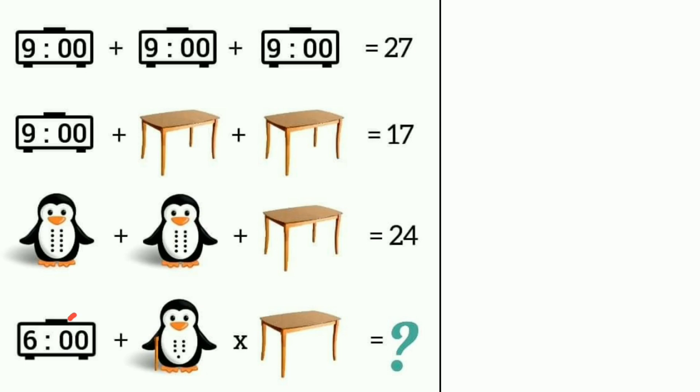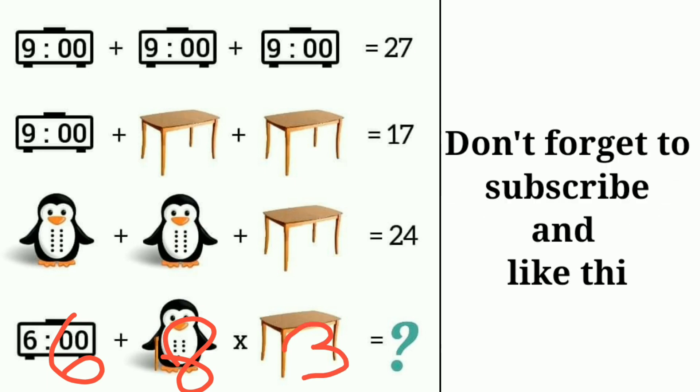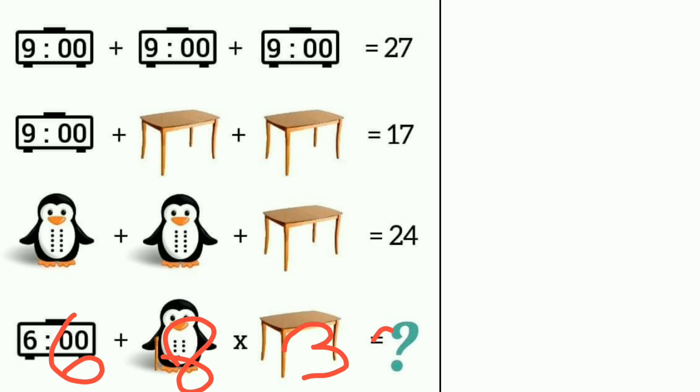So here 6 plus 8 into how many legs are there in the table? 3. So the value of this table is equal to 3. Now we have to solve by using BODMAS. 8 times 3 is 24, 24 plus 6 is 30. So the correct answer of this puzzle is 30.